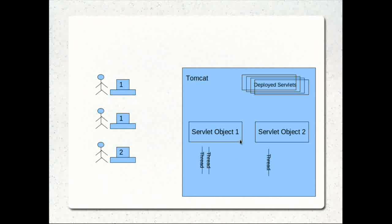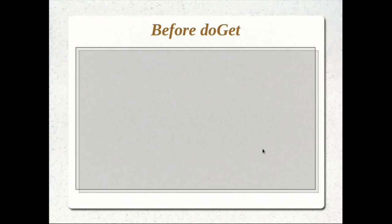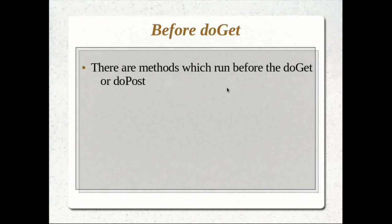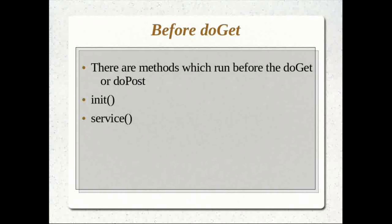There are a few methods associated with these two important phases, and they actually execute even before doGet and doPost execute. We have not used those methods in our examples — we don't have to unless we need something to run during those phases. The two methods we're going to look at are the init method and the service method. The init method corresponds to the first phase when the object is created for the first time, and the service method corresponds to the second phase when a new request comes in.